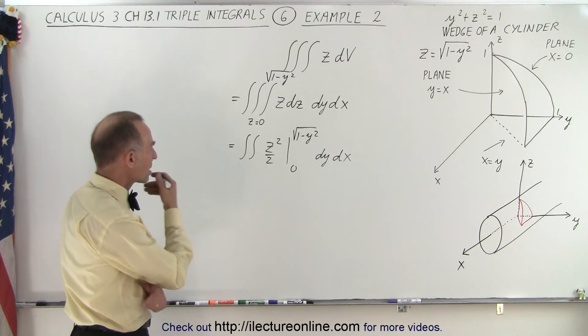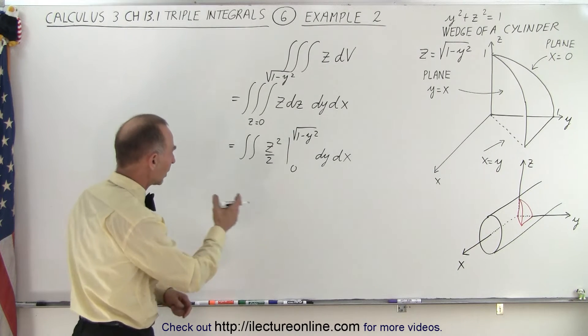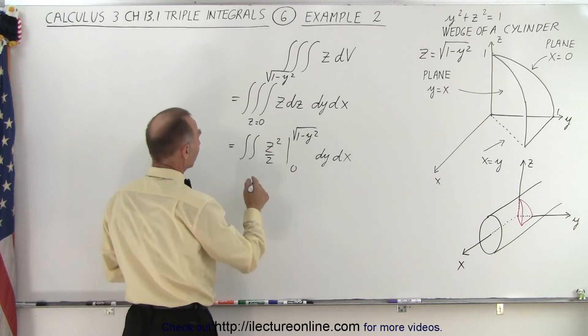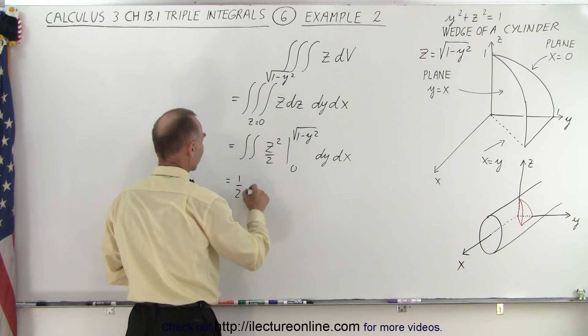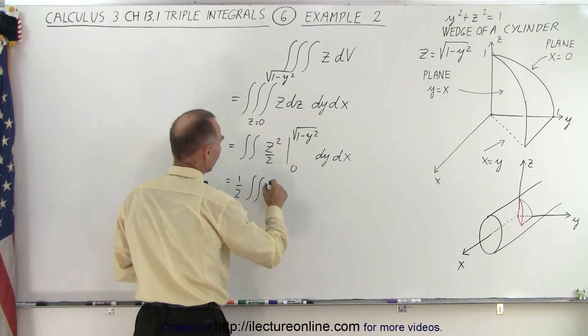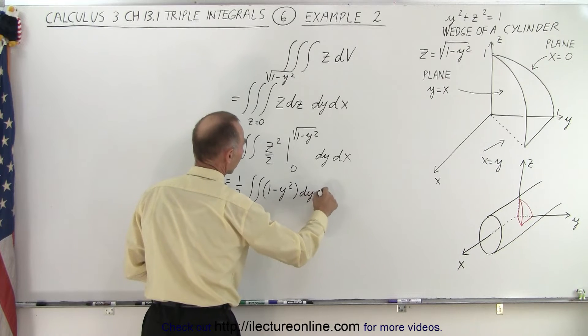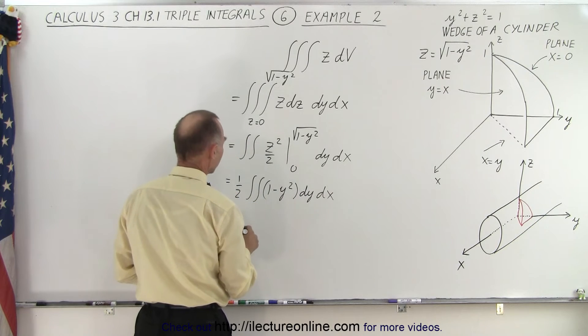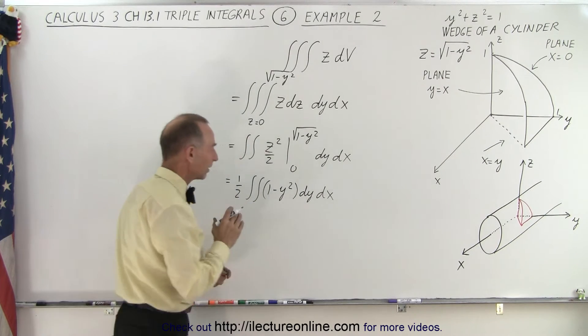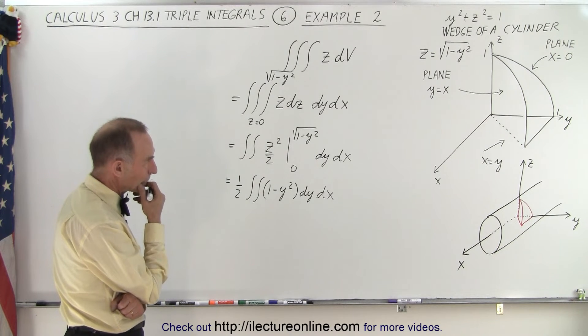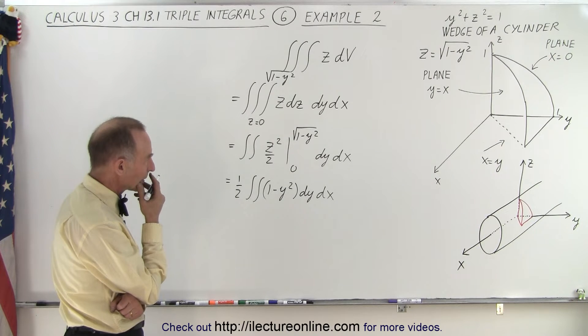Well, the one half goes in the front, we plug in the upper limit, when we plug in the lower limit we get zero, so this becomes one half times the double integral of one minus y squared dy dx, and now we have to worry about what our next integral is going to be.